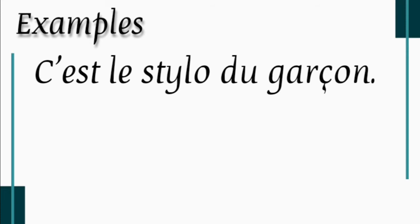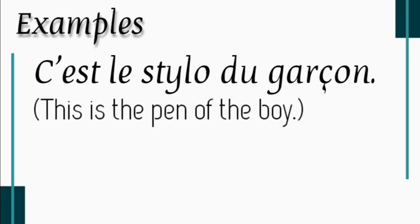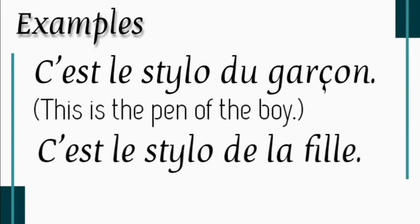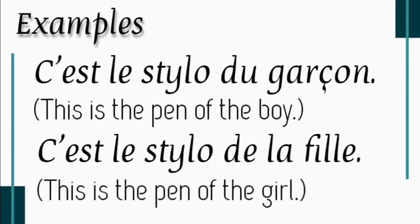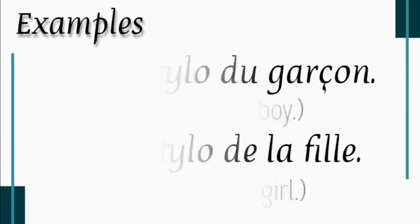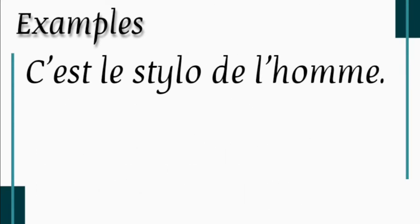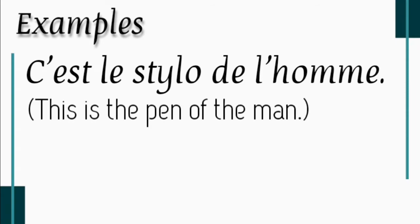Let's understand these with examples. C'est le stylo du garçon — this is the pen of the boy. Garçon is masculine singular, so we use du. C'est le stylo de la fille — this is the pen of the girl. Fille is feminine, so we use de la. C'est le stylo de l'homme — this is the pen of the man. Homme is masculine singular but starts with a vowel, so we use de l'.